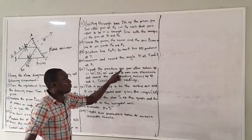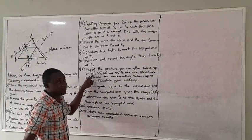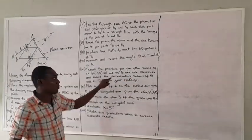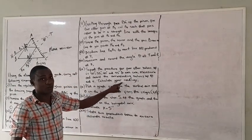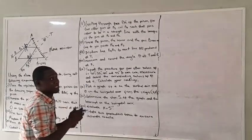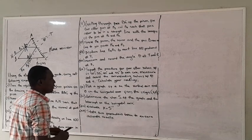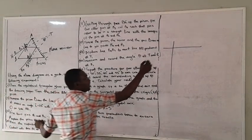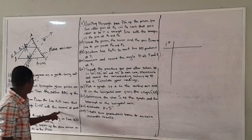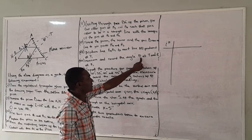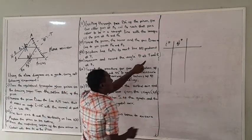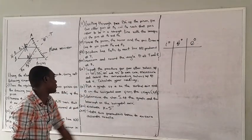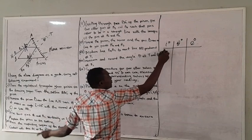Repeat the procedure for four other values: I equals 30 degrees, 35 degrees, 40 degrees, and 45 degrees. In each case, measure and record the corresponding values of theta and E. I'm going to write out the given parameters. The table will have three columns: I in degrees, theta in degrees, and E in degrees. The first angle is 25 degrees, so I record 25.0.